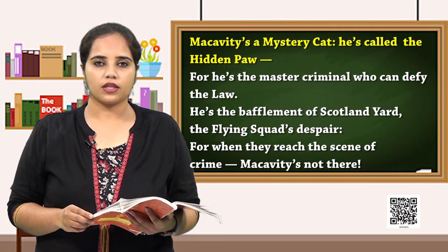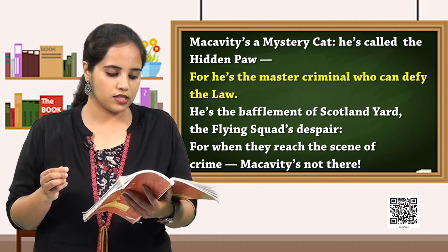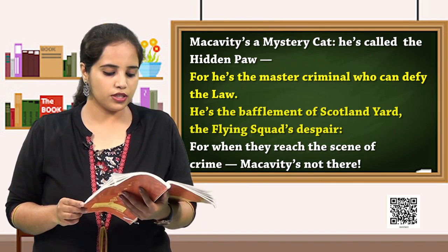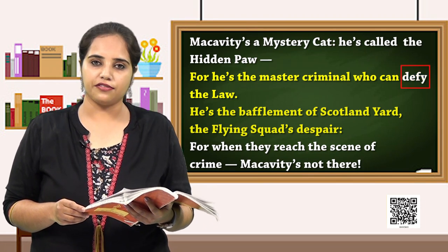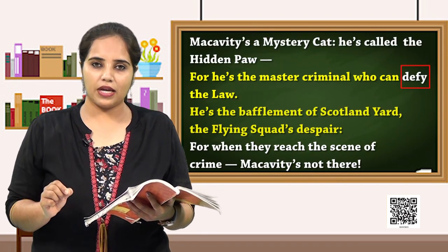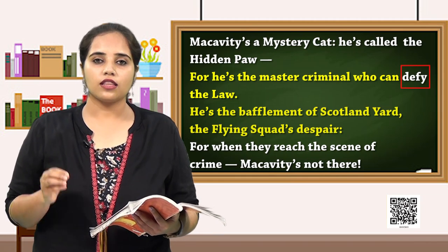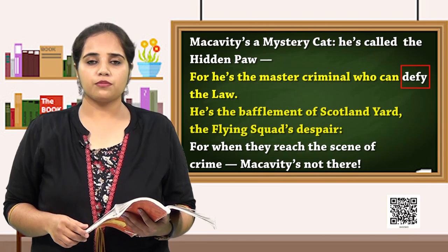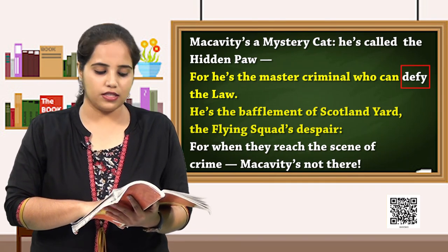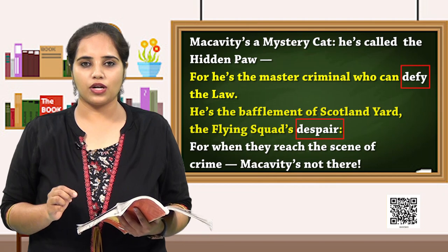Why is Macavity called a hidden paw? He is called so because the first word in your glossary is 'defy,' and the meaning of defy is to disobey or resist openly. So here, Macavity is a master criminal who can defy human-made laws and abscond from the strongest police squads, like Scotland Yard and the flying squads of London. If you do not know the meaning of 'despair,' look through a dictionary.